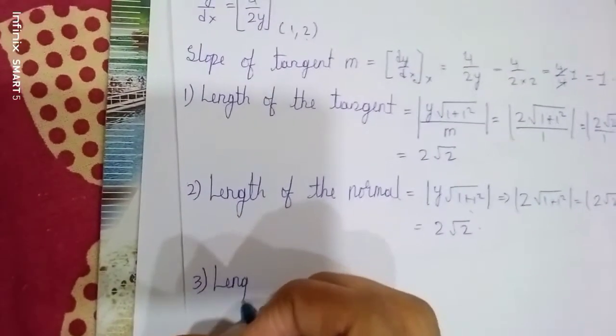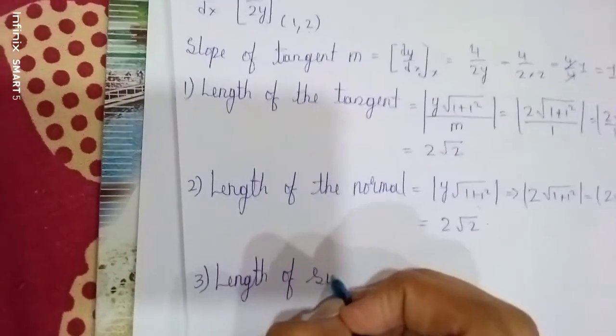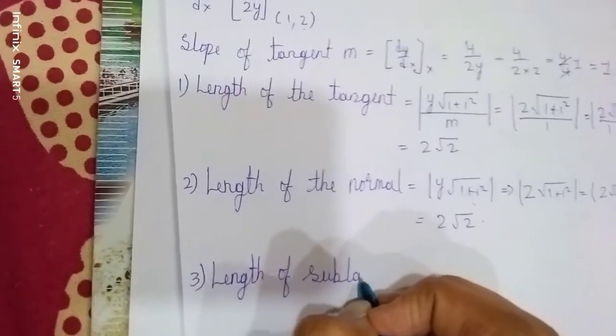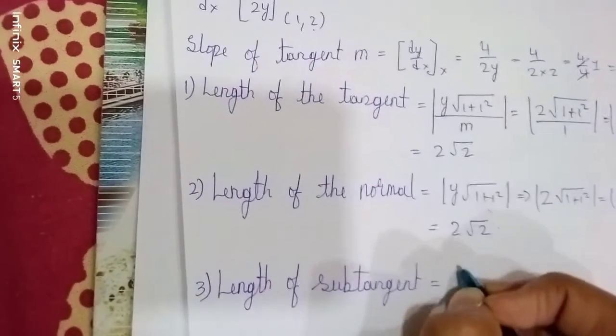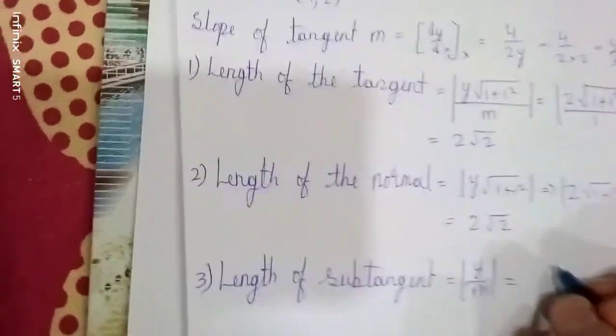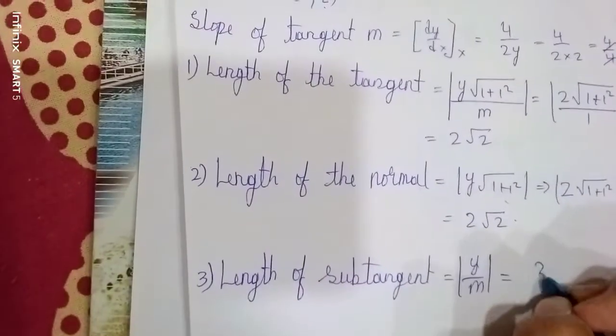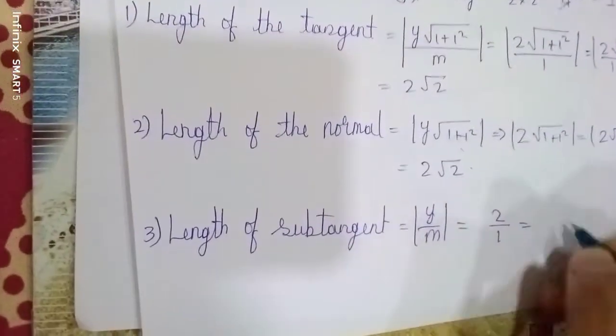Length of subtangent = |y/m|. So y = 2, m = 1. Therefore |2/1| = 2.